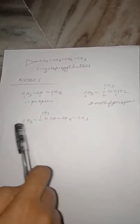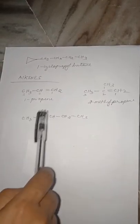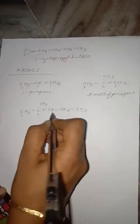Now students, let us try to name this alkene. You have to number it in such a way that the double bond gets the minimum number. We number: 1, 2, 3, 4, 5. The methyl group is in the second place. Therefore it is 2-methyl-2-pentene.